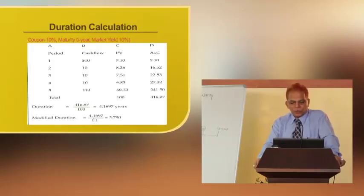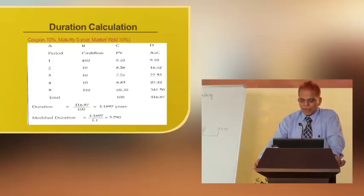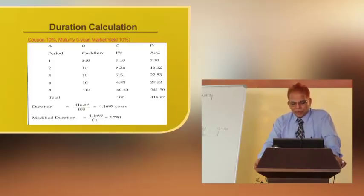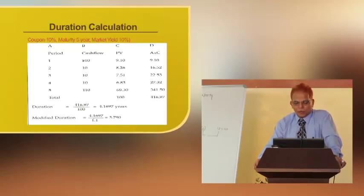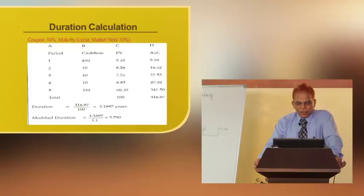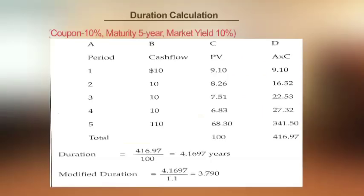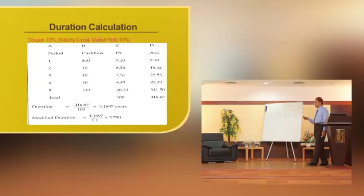Following the definition of duration, we multiply each period by its present value to get the weighted cash flows. The total comes to 416.97, and with the total present value at 100, the duration is 416.97 divided by 100, which equals 4.1697 years. The modified duration is duration divided by (1 + yield), so 4.1697 divided by 1.10 gives a modified duration of 3.79.